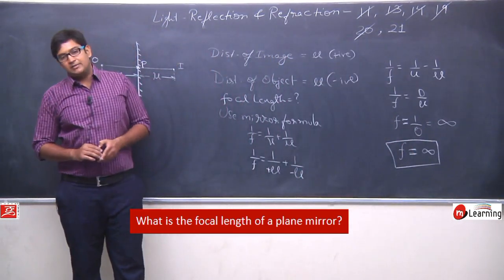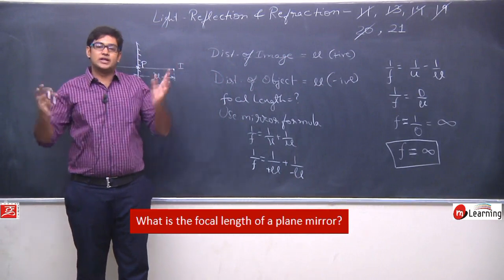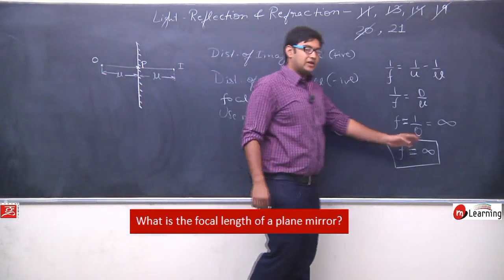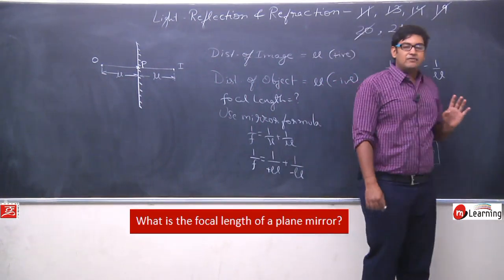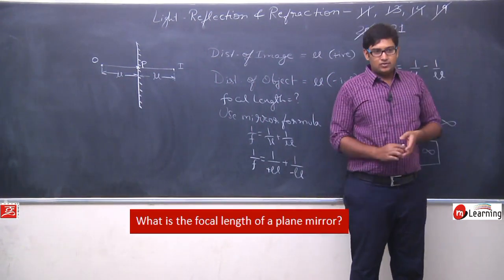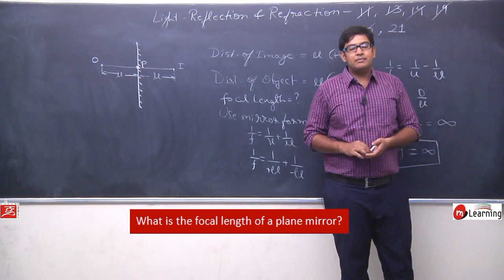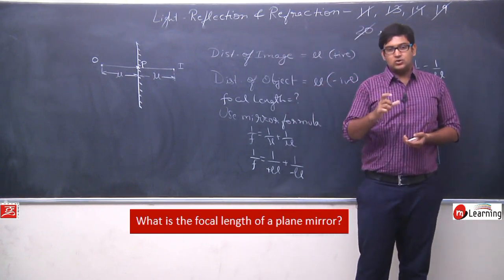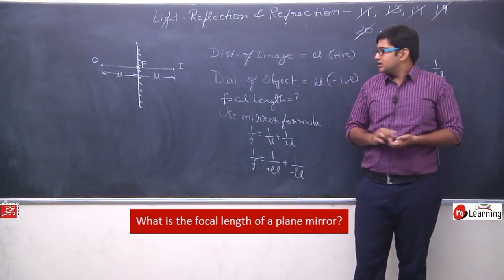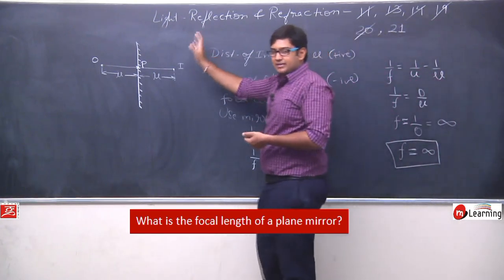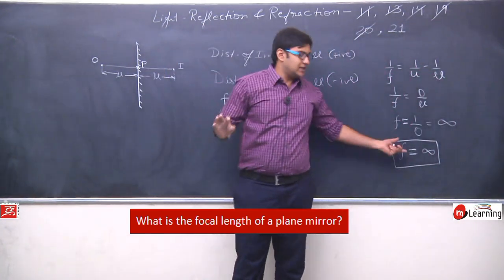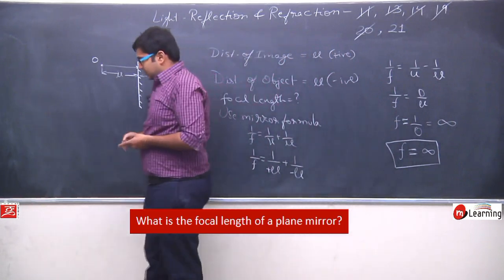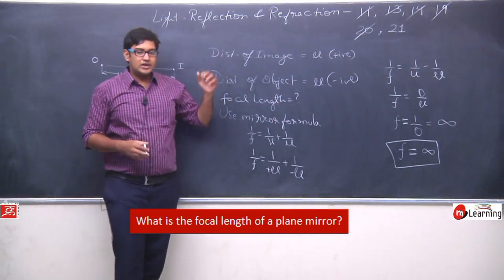So the focal length of this plane mirror equals infinity. The focal length of a plane mirror is infinite. Infinity does not mean the value cannot be determined — infinity means an extremely large value, beyond millions, billions, trillions. Such a large value is considered infinite. So the focal length of a plane mirror is infinity. This was question number 21.